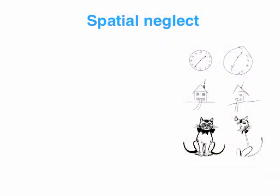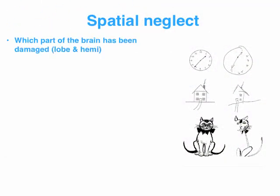In terms of spatial neglect, we ignore the minority here. We focus on the majority: spatial neglect victims have suffered damage to their right parietal lobe. You won't need to discuss that some people who suffer from spatial neglect have actually damaged their left parietal lobe.